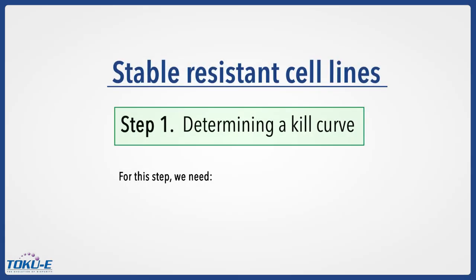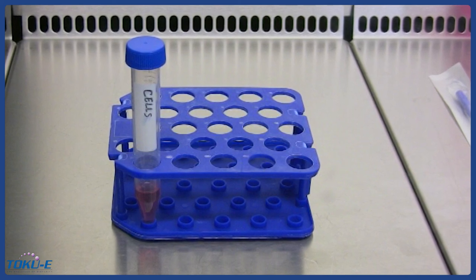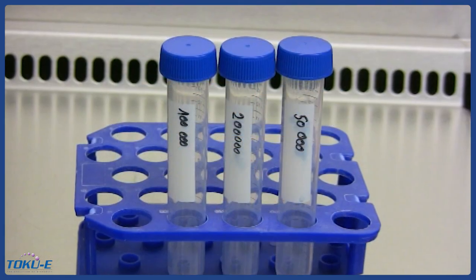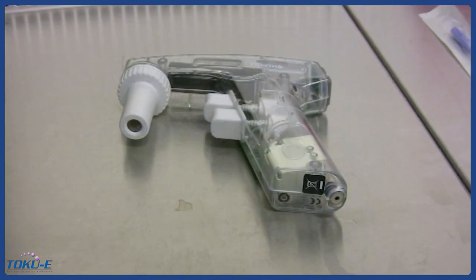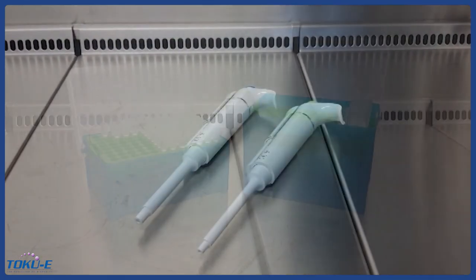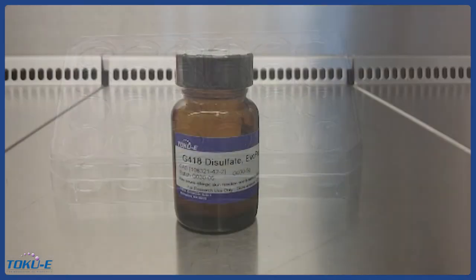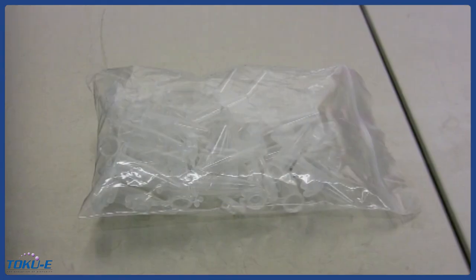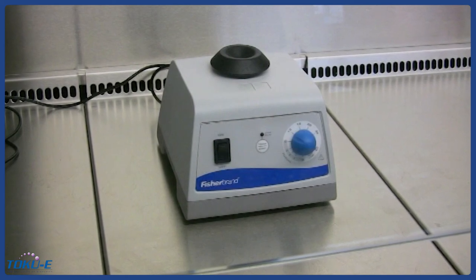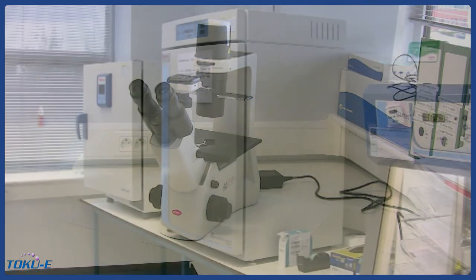For this step, we need cells detached according to standard cell culture procedures, culture medium, 15 milliliter tubes, a pipetter, pipettes, mono channels, tips, a 24-well plate, selection antibiotic, microtubes, needles, a vortex, a laminar flow, a microscope, and an incubator.